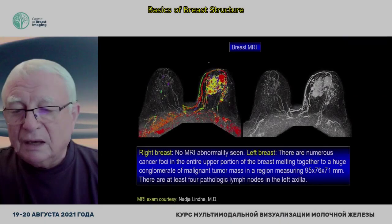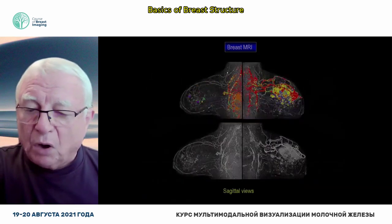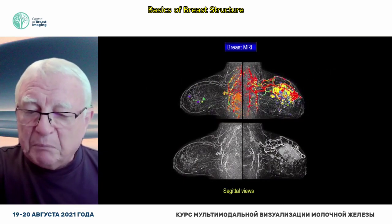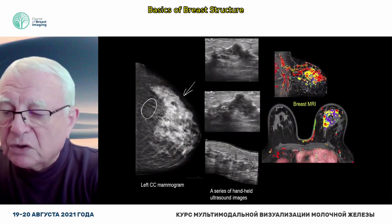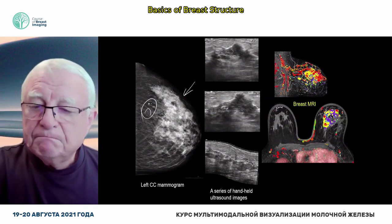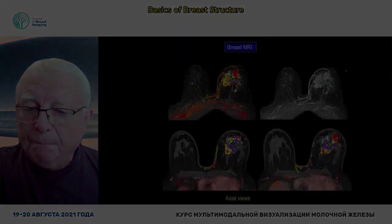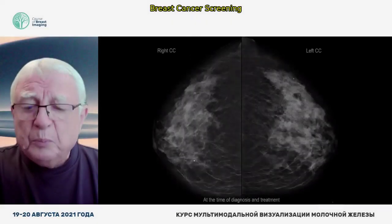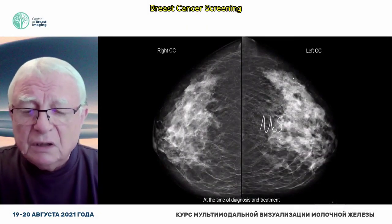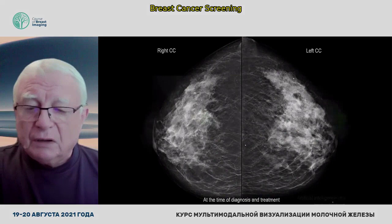And this is the sad thing: the same case showing a very extensive carcinoma on MR — if I put the mammogram beside it, you just don't see it. But it's very well visible on ultrasound and very well visible on MR. It's much simpler to perform an ultrasound examination, preferably automated breast ultrasound examination.